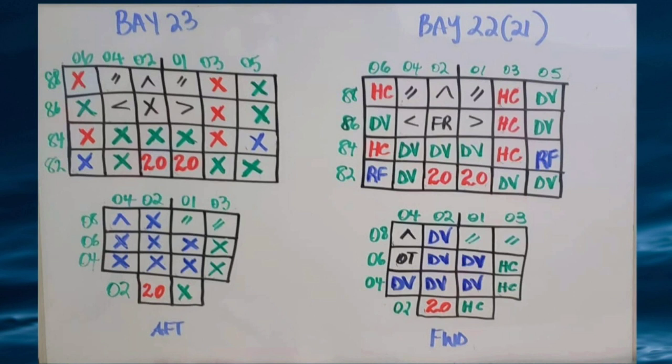Please take into consideration that the high cube containers are taller than regular containers. So once you store a high cube within a row, you cannot store it all the way up because the hatch cover won't be able to close. Whenever you store a high cube container within a row, put two strokes in the last slot to remind yourself that you cannot place a container there, because the hatch cover won't be able to close.